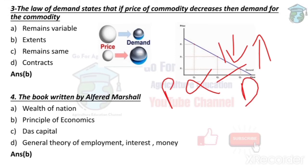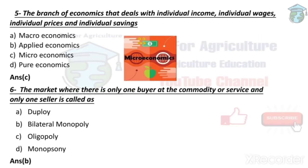The book written by Alfred Marshall is 'Principles of Economics.' Next, the branch of economics that deals with individual income, individual wages, individual prices, and individual savings is called microeconomics. Microeconomics focuses only on the individual. Macroeconomics, on the other hand, is a very large sector dealing with the overall economy and a huge number of things.